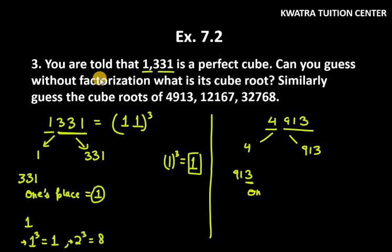The ones place of 913 is 3. Now, which cube ends in 3? The cube of 7 ends in 3, because 7 cubed is 343. So the ones place of our cube root is 7.